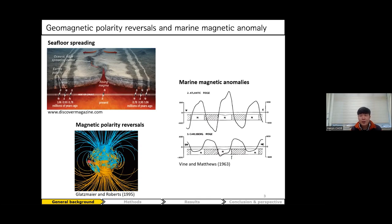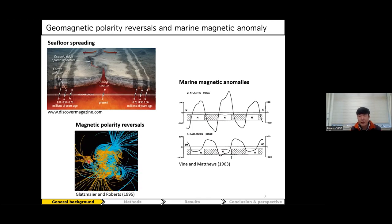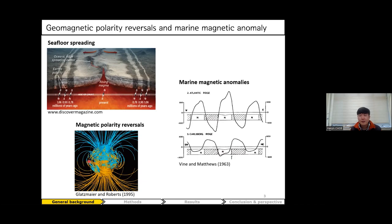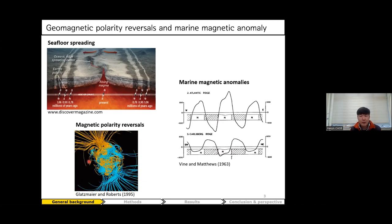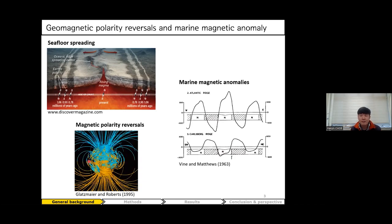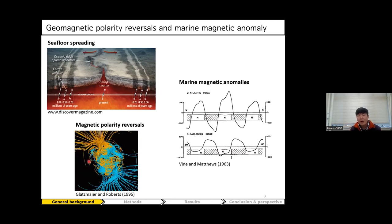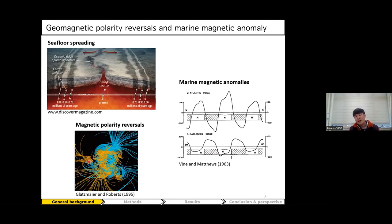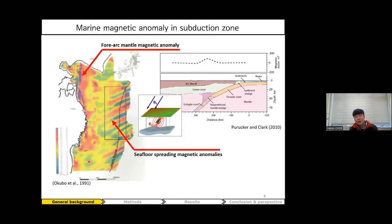During the formation of oceanic lithosphere, the oceanic crust starts to record the magnetic anomaly in the same orientation as Earth's magnetic field. Magnetic anomaly exhibits a wiggling shape because of the randomly changing magnetic polarity. Using this, we can estimate the age of oceanic crust and kinematic properties such as spreading speed and movement history of the plate.